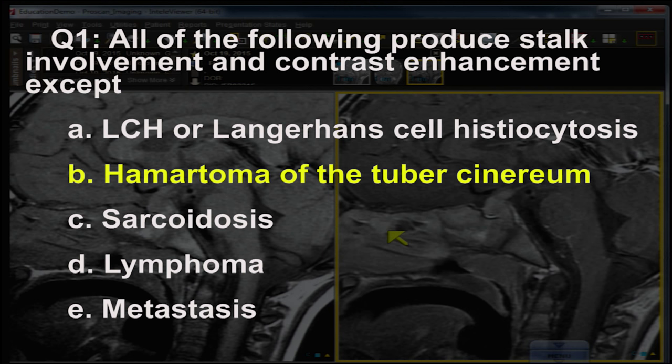The other choices do enhance or cause enhancement of the stalk: LCH/Langerhans cell histiocytosis, sarcoid — an abnormality usually seen in adults — lymphoma, also adults, and metastases, especially from breast and lung, also adults.